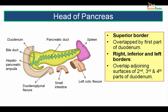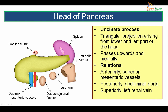The superior border of the head of pancreas is overlapped by the first part of duodenum. The right, inferior, and left borders are related to the adjoining surfaces of the second, third, and fourth parts of the duodenum. The uncinate process is a triangular projection arising from the lower and left part of the head of pancreas, passing upwards and medially. Anteriorly it is related to the superior mesenteric vessels, posteriorly to the abdominal aorta, and superiorly to the left renal vein.